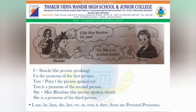What did Priya say? 'Yes, she is an excellent teacher.' 'She' is the third person pronoun. Who is 'she' here? Miss Bhushan — the person spoken about. So I, me, he, him, she, her, we, us, you, it, they, them are personal pronouns.